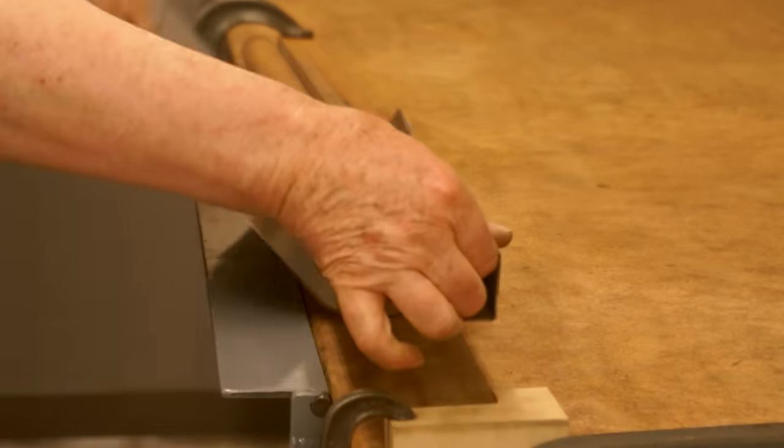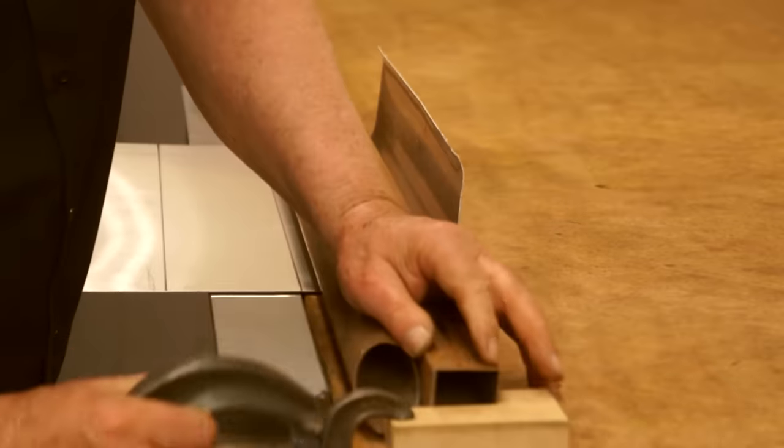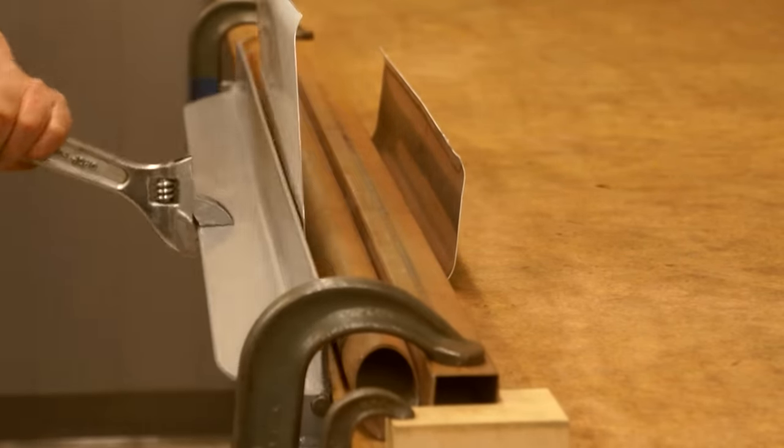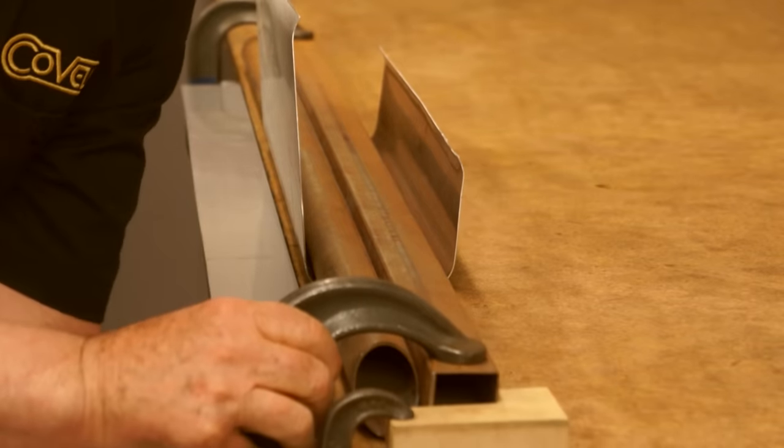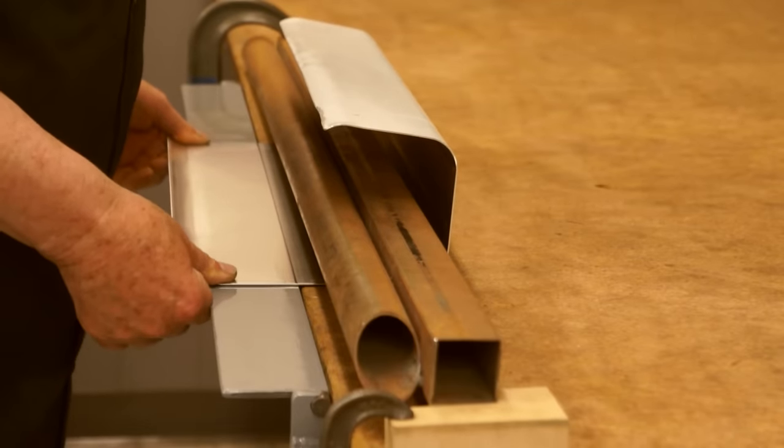Now the die is unclamped, and the part is positioned for the second bend. The last bend is made in the same way.